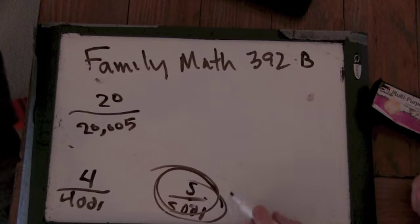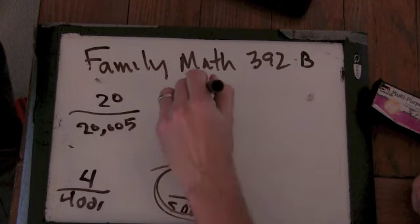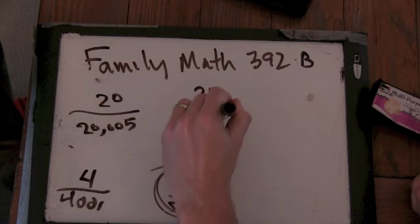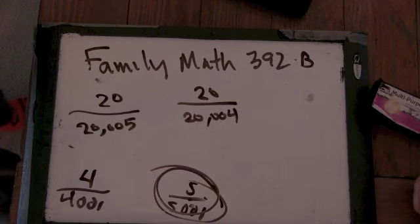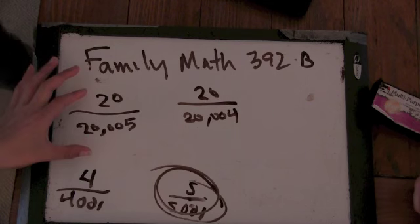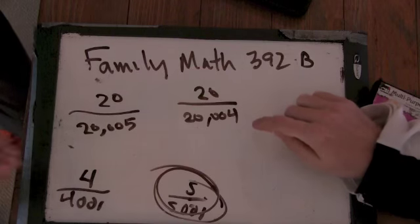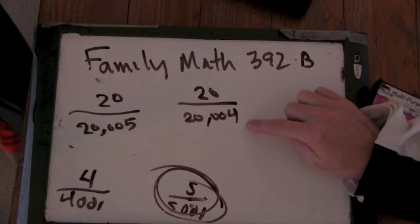And multiply this one by 4 over 4, you get 20 over 20,004. So that means that this one is smaller. Why? Because this fraction, this denominator is less. The denominator is less.